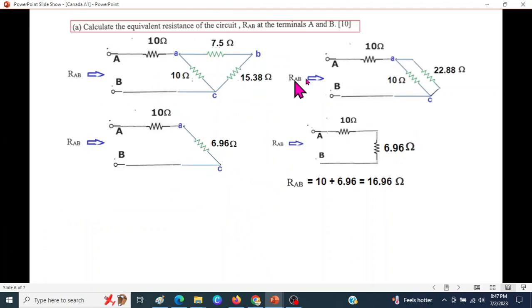From here, we can redraw it like this, adding these two will be 20.88. Now these two are in parallel, so solving them in parallel, we get 6.96. 10 and 20.88 will give us 6.96.